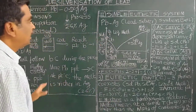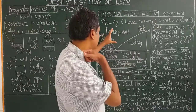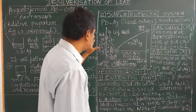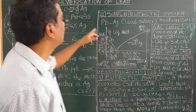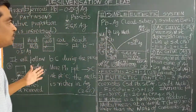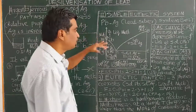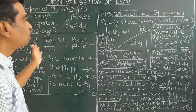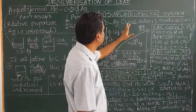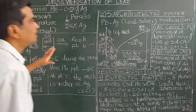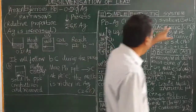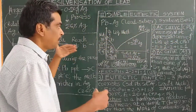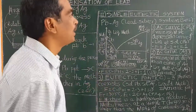First, you draw the phase diagram. How will they ask the question? 'Draw the phase diagram of the desilvering system and explain.' It is a two-component system — the lead-silver system is a two-component system. And there are only two phases: solid and liquid in equilibrium.